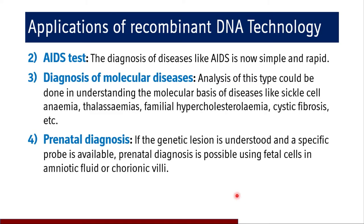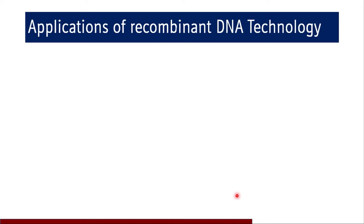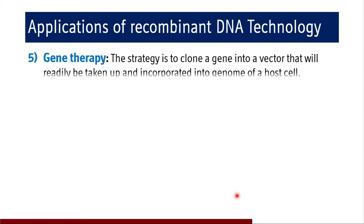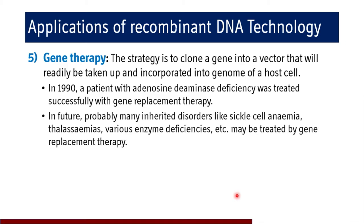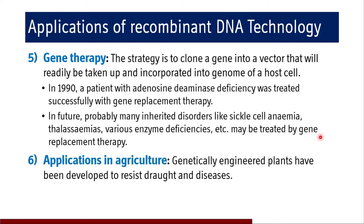Recombinant DNA technology also has a role in gene therapy. The strategy is to clone a gene into a vector that will be taken up and incorporated into the genome of a host cell. In 1990, a patient with adenosine deaminase deficiency was successfully treated with gene replacement therapy. In the future, many inherited disorders like sickle cell anemia, thalassemia, and various enzyme deficiencies may be treated by gene replacement therapy, with research still ongoing.